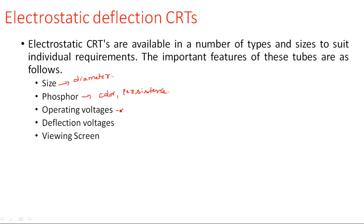Operating voltages: several types of accelerating anode and focusing anodes are there, and we need to know what voltages are required to energize the electron beam. Deflecting voltage specifies what types of voltages deflect the electron beam on the screen — whether AC or DC — and where they are applied to the horizontal and vertical deflection plates. Viewing screen size is measured in centimeters, and different screen sizes are available.